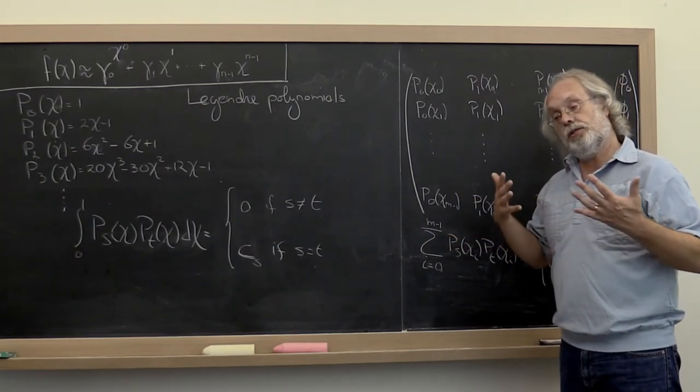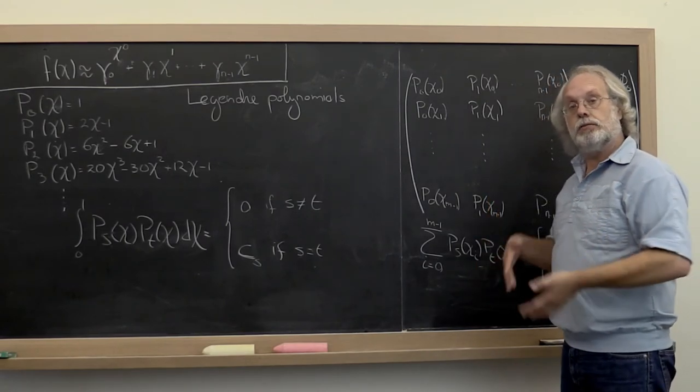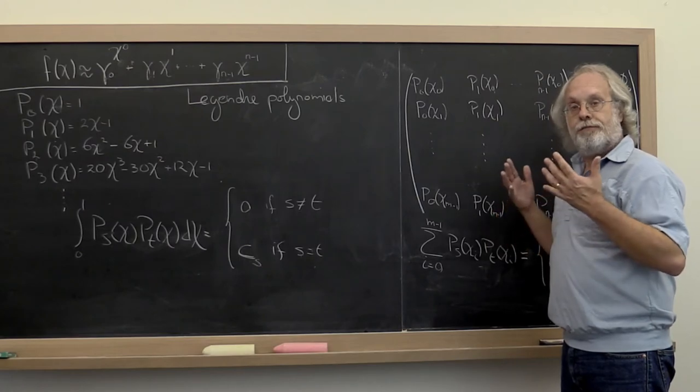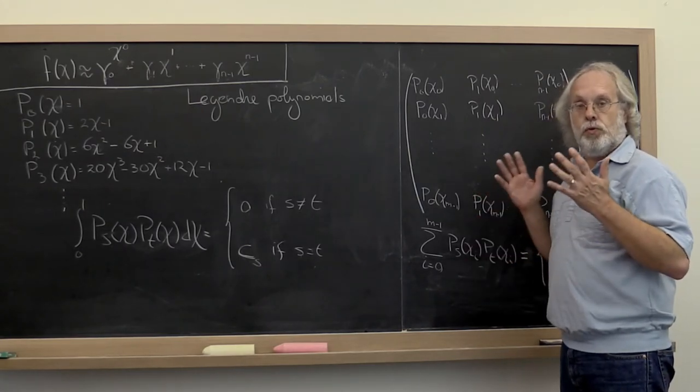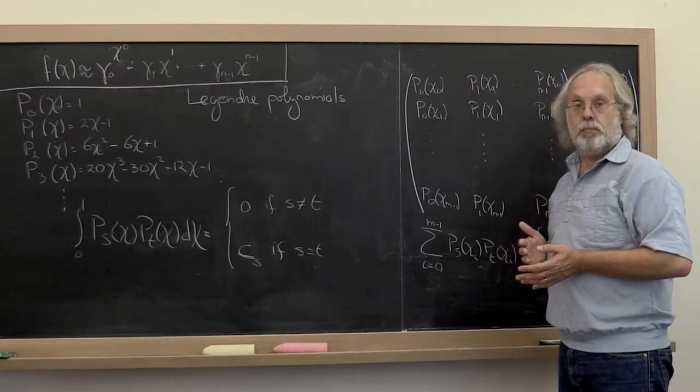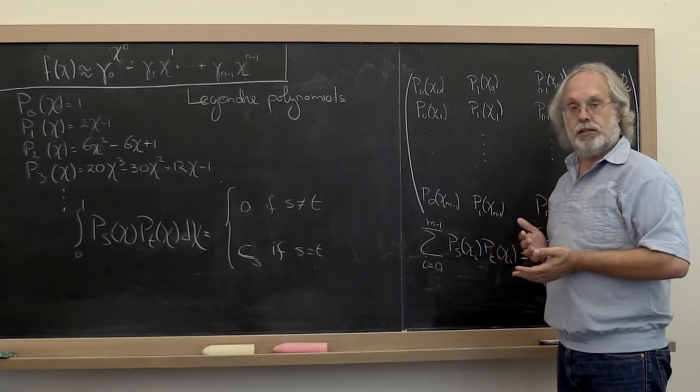What we're going to see this week is how to take such a matrix and how to factor such a matrix into a matrix that has orthonormal columns times a matrix with nice properties, namely an upper triangular matrix.